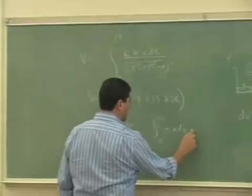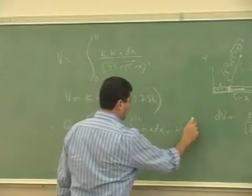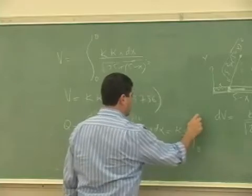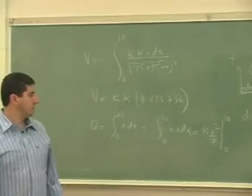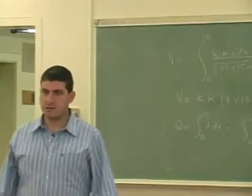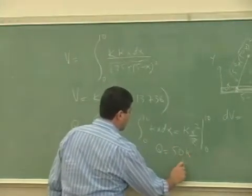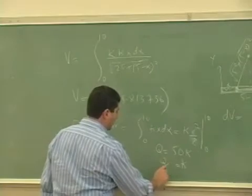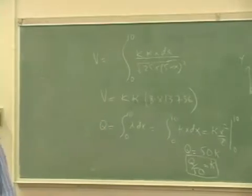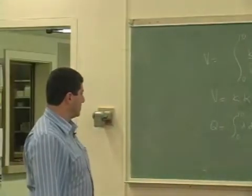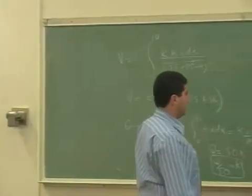This one's going to be kappa x squared over 2, right? x squared over 2 from 0 to 10. So that's going to be 100 over 2 which is 50, 50 kappa. So Q is equal to 50 kappa, therefore kappa equals Q over 50.